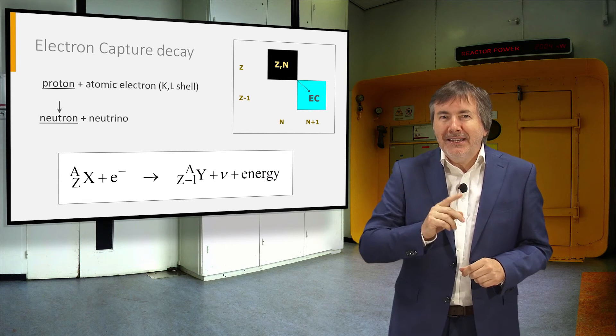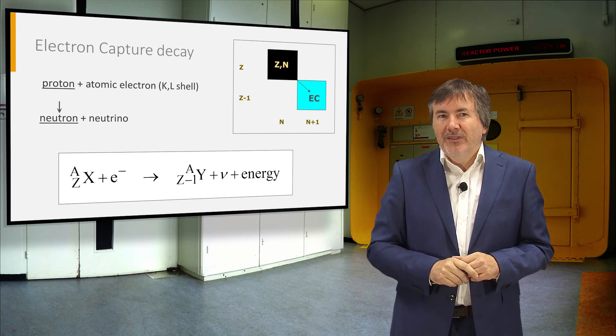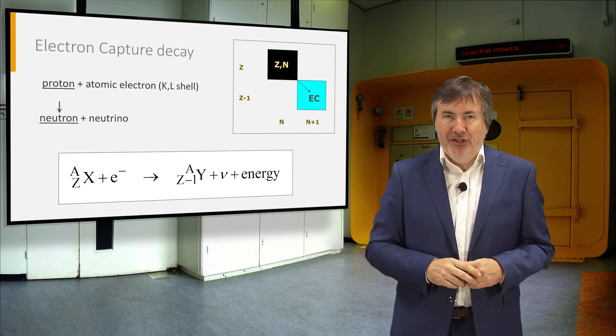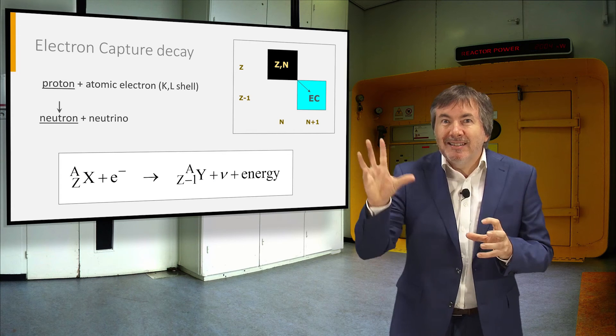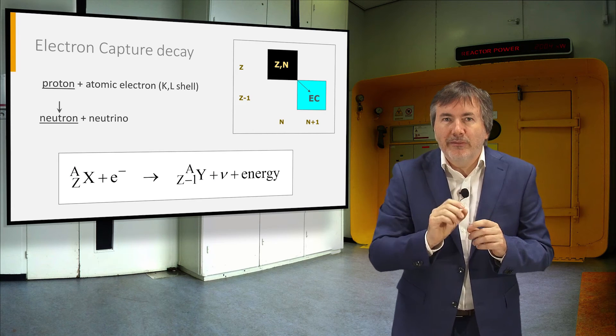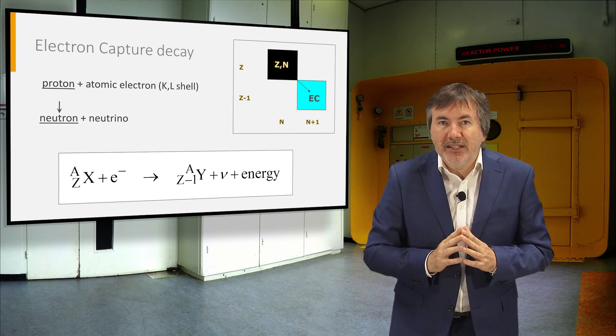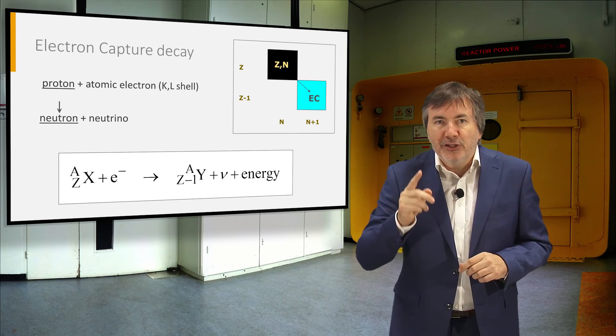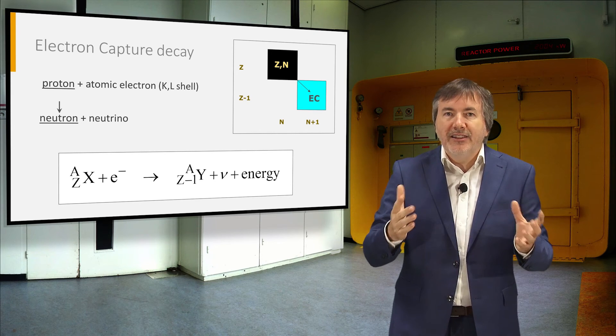Beta-plus decay has a competitor, namely electron-capture decay. The nucleus steals away an electron from one of the inner atomic shells, and then converts a proton into a neutron and emits a neutrino.